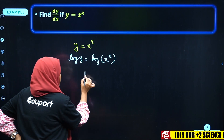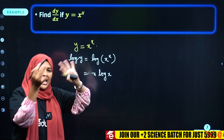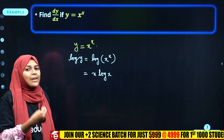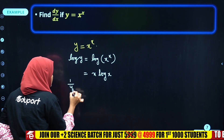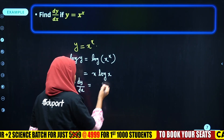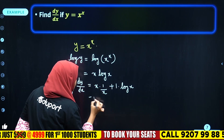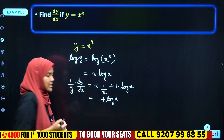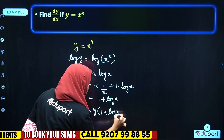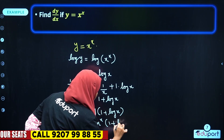Differentiating: (1/y)(dy/dx) on the left. On the right, differentiating x·log x using the product rule gives: x × (1/x) + 1 × log x = 1 + log x. So dy/dx = y × (1 + log x). Since y = x^x, the final answer is dy/dx = x^x (1 + log x).